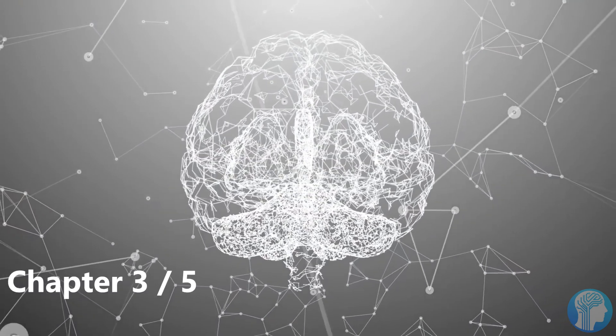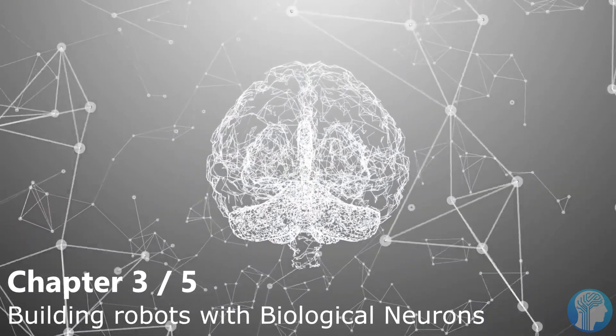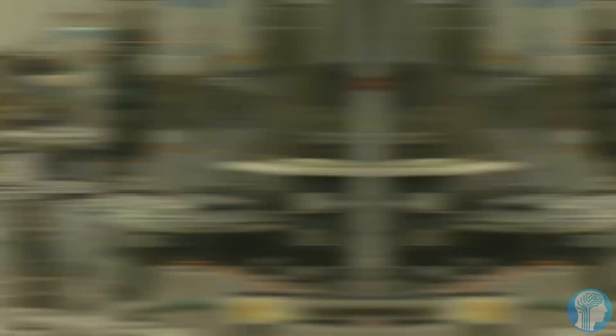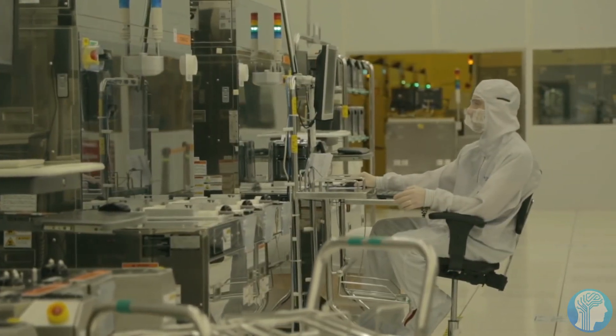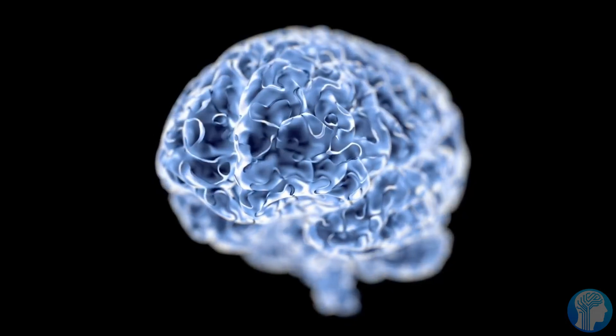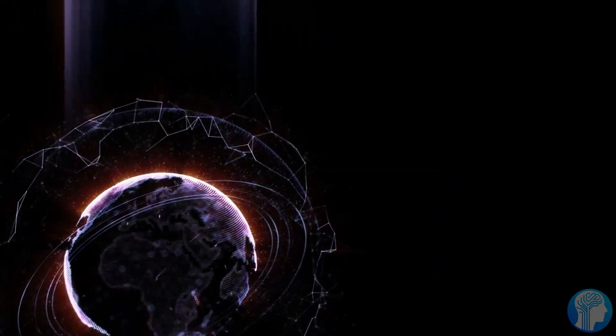On average, biological neurons fire roughly 200 times every second. Signals travel at various rates, ranging from 0.61 meters per second to 119 meters per second, depending on the kind of nerve impulse.